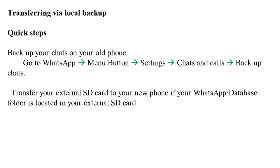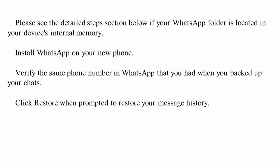If you have a backup on your external SD card, you can copy it, then remove the SD card and insert it into the new phone. If your backup is in internal memory, copy and paste it onto the external SD card, then remove the SD card and insert it into the new phone. Then install WhatsApp on your new phone and verify the same phone number you used for the backup. Click Restore when prompted to restore your message history.